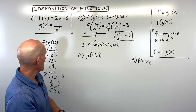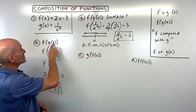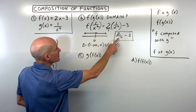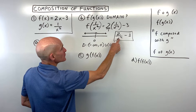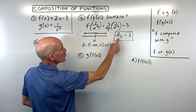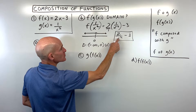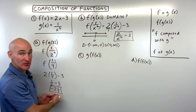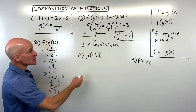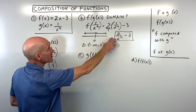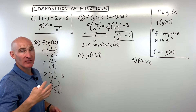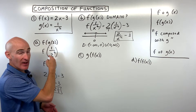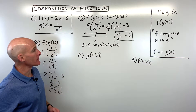Notice that if I put 2 in for x: 2 squared is 4, 2 over 4 is 1 half, 1 half minus 3 is negative 2 and 1 half. So this function does it all in one step instead of having to do multiple steps like we did before.